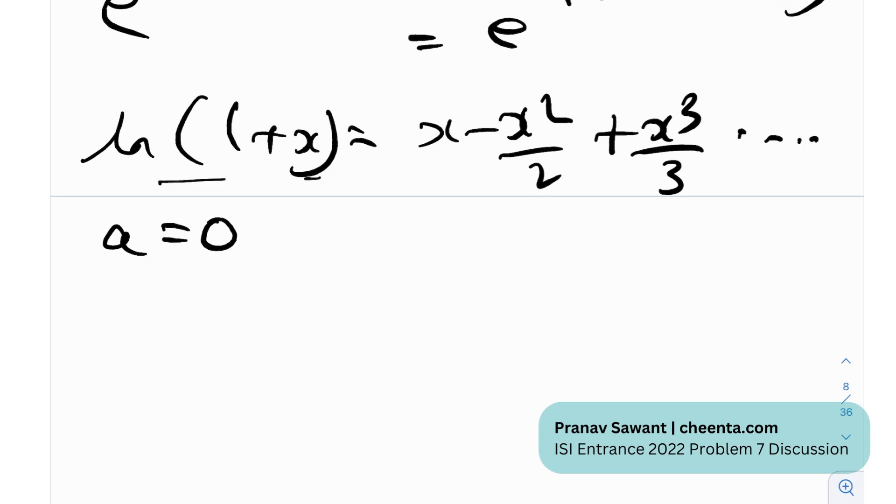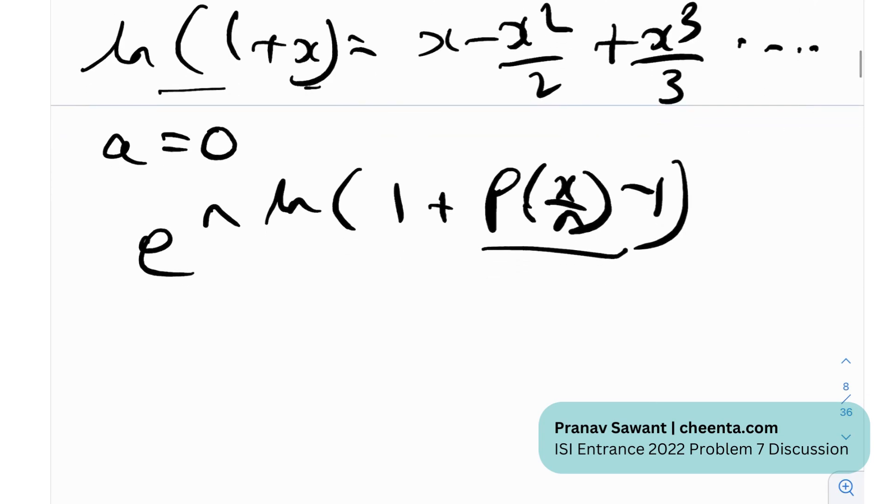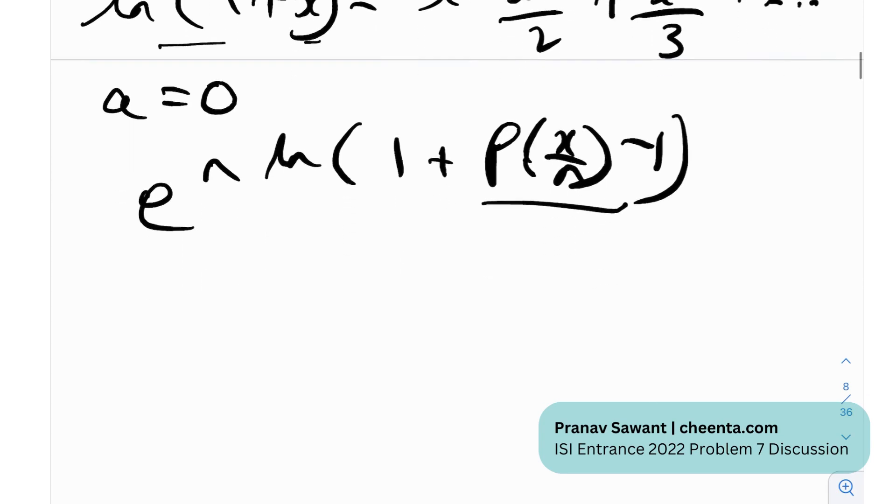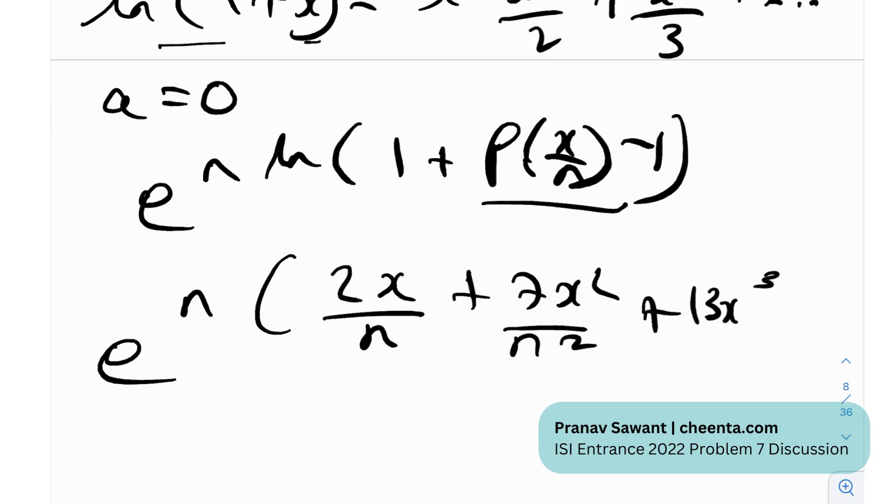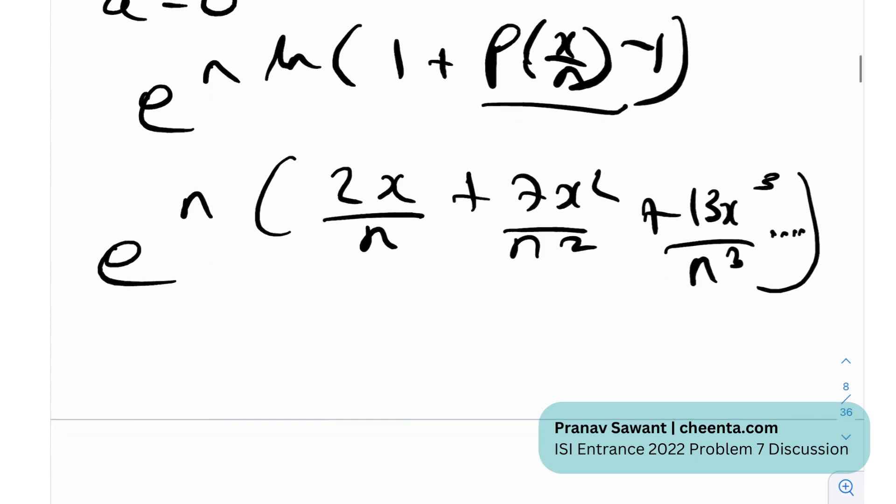So, I'm just going to write ln(1 + x) as this. And in our case, in the problem, we essentially had e raised to the power n times ln of (1 + a certain quantity P(x/n) - 1). So, writing it in the form that is given to us using the expansion, we will get e raised to n, and this would become 2x/n plus 7x²/n², plus 13x³/n³, and certain other terms, right?